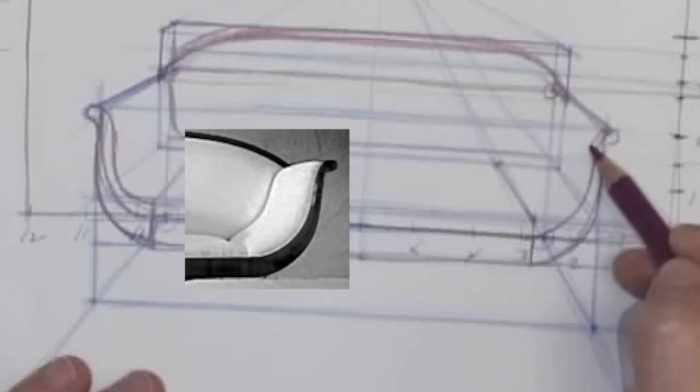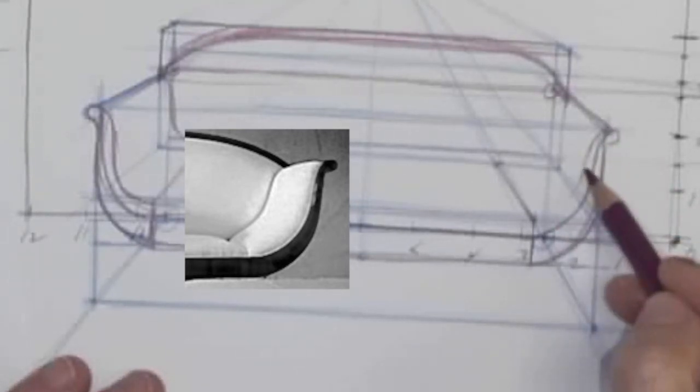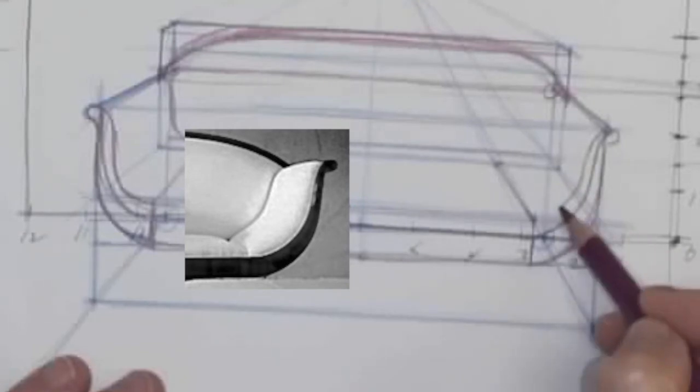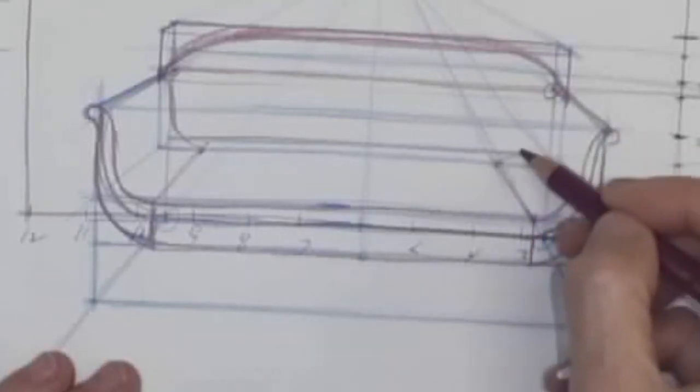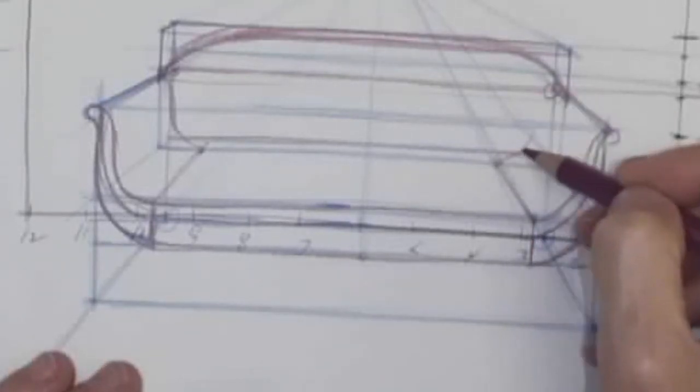Now, see, don't forget, here we have to put the thickness of the cushion. There's the thickness of the cushion as it comes around. Then we have to echo that curve at the back.